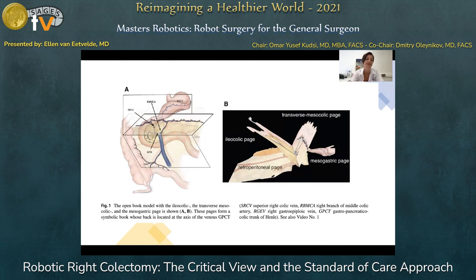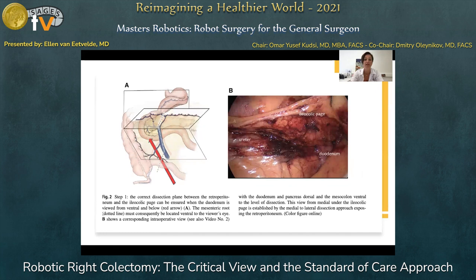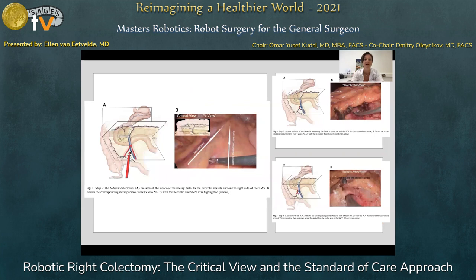The first dissection is the sub-ileal dissection where we separate the ileocolic page from the retroperitoneal page, and we dissect over the duodenum and the pancreatic head. The second step is the V-view, where we identify the ileocolic vessels and superior mesenteric vein, and we start dissection in the avascular space between both structures.